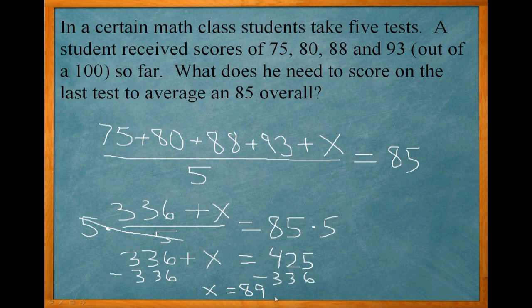So we add up all the numbers that we have on top for the test scores: 75 plus 80 plus 88 plus 93. That's 336. So you have 336 plus X over 5 equals 85. Now we need to isolate the X to get X by itself. So I multiply both sides by 5 to get rid of the 5 on the bottom. 5 over 5 is 1, so it essentially cancels out the 5 on the bottom. We multiply the right side by 5. So we get 336 plus X equals 425.